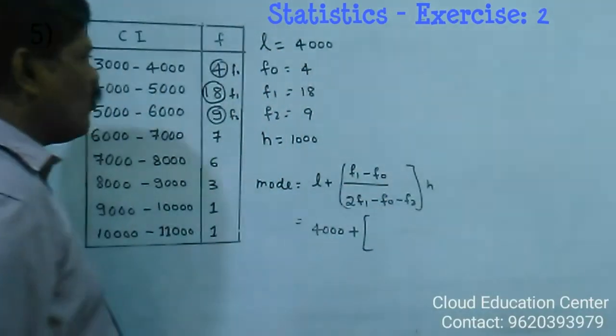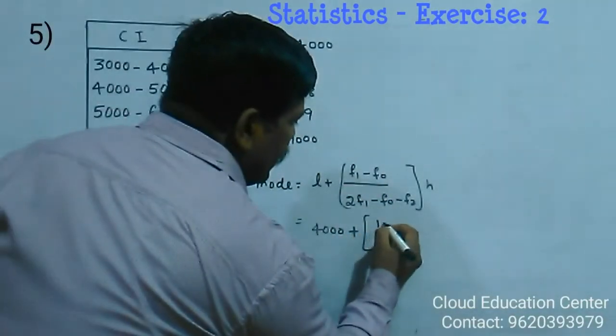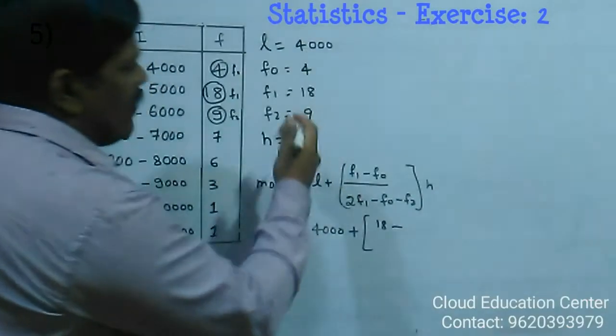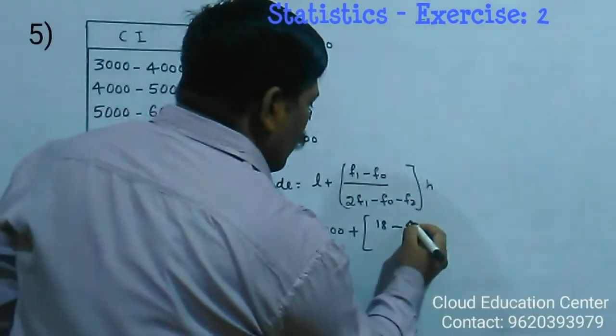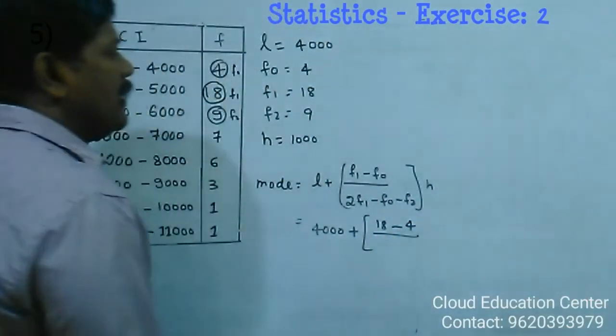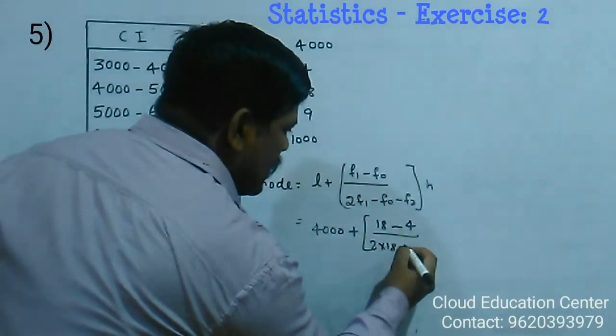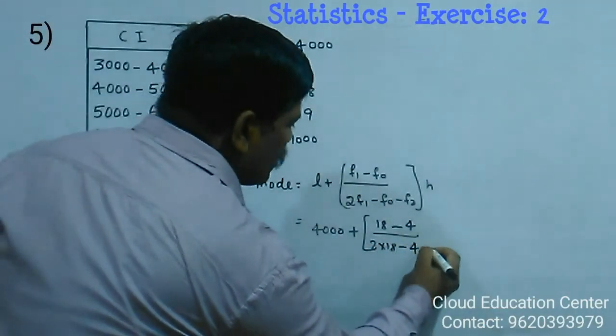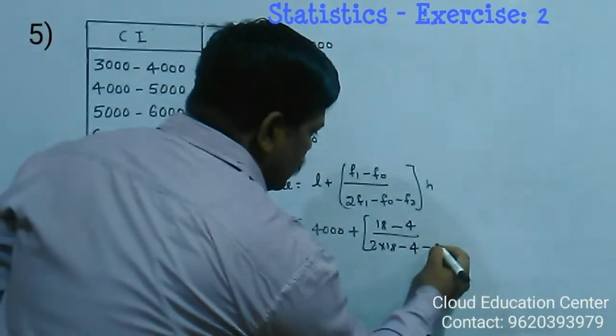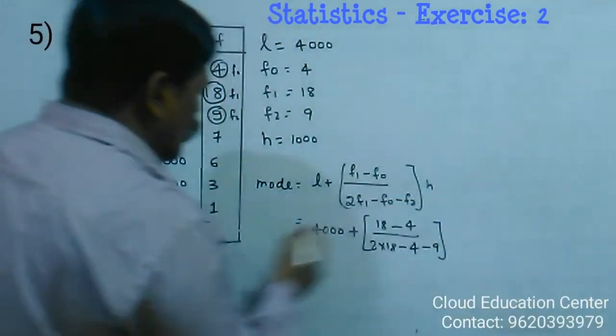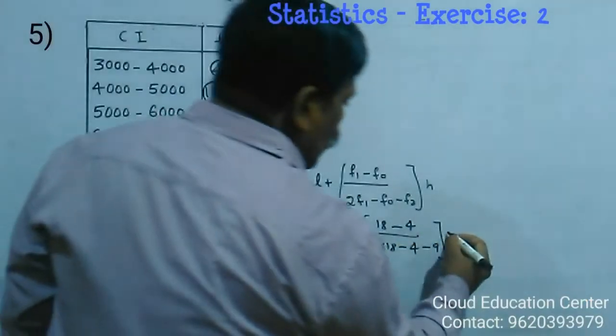Plus f1 is 18 minus f0 is 4, divided by 2 into f1 is 18 minus f0 is 4 minus f2 is 9, into h is 1000.